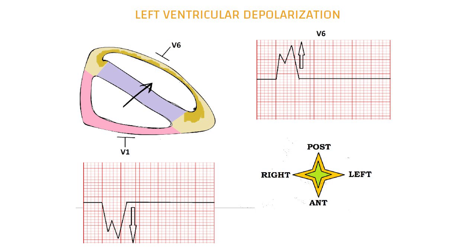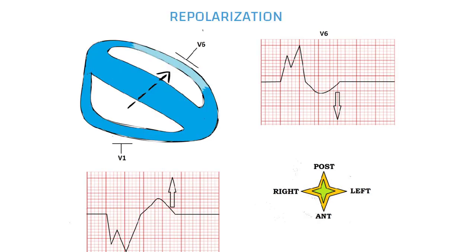Hence, the final QRS morphology resembles a W in lead V1 and an M in lead V6. Since the right side of the heart depolarizes early, it repolarizes early as well. The wave of repolarization starts from the right heart and then moves towards the left heart, pointing towards lead V6 and away from lead V1.